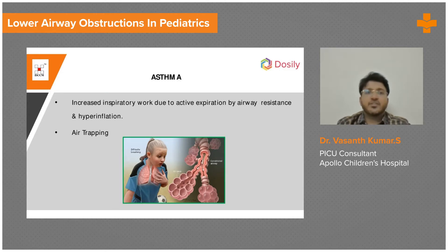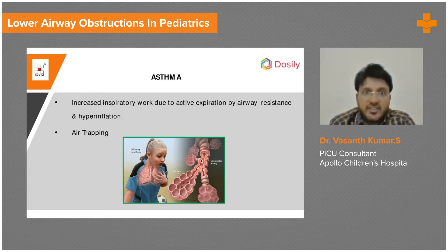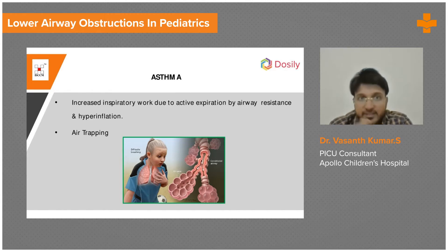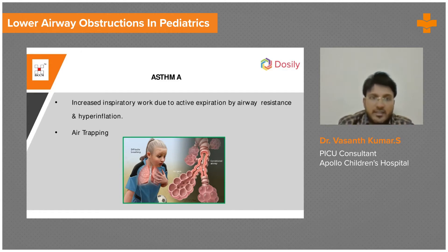There is increased respiratory work because air is not able to come out. In asthma, air is going in but not coming out. The next time, the patient has to take a lot of effort to breathe in to overcome the pressure in the alveoli. So even though asthma is primarily an expiratory problem, there is also an inspiratory problem secondary to the expiratory problem. There is air trapping — all the air going in is not able to come out.